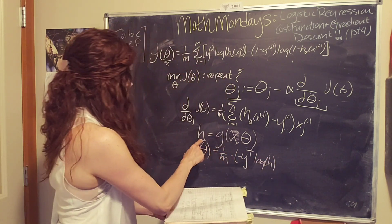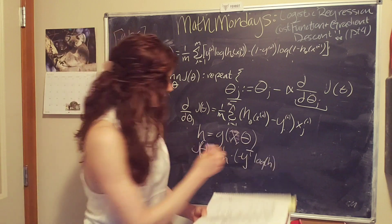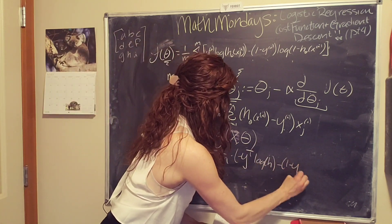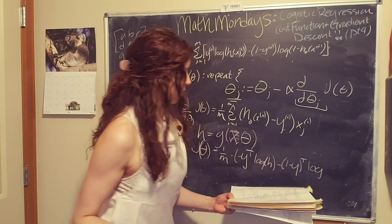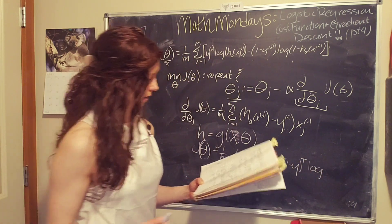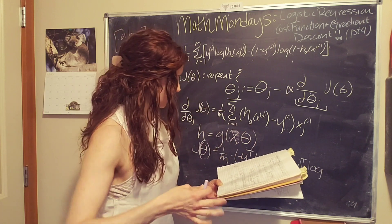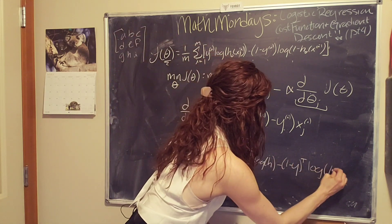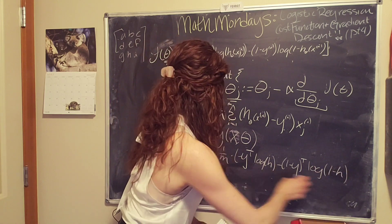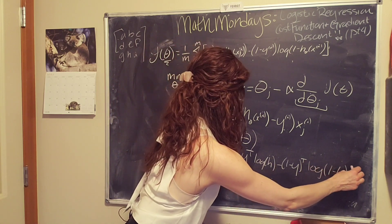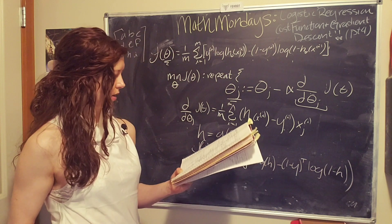So then we have the log times h, and where h is defined as this function, minus 1 minus y. It's going to be the transpose of that. Because again, y is going to be a vector, so we gotta make it long instead of tall. It's a technical term. Times 1 minus h, and I think I need another thing there. Okay, cool.